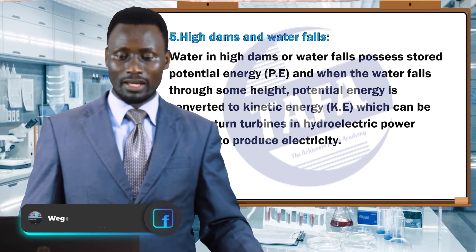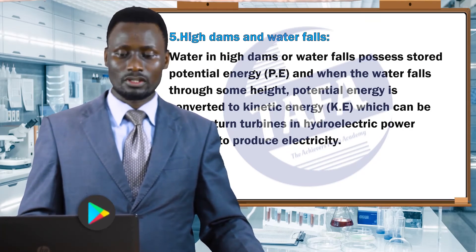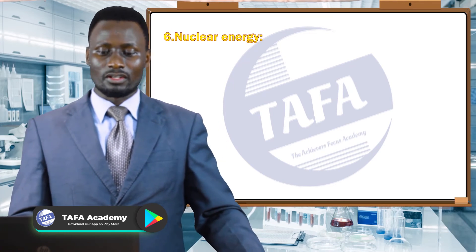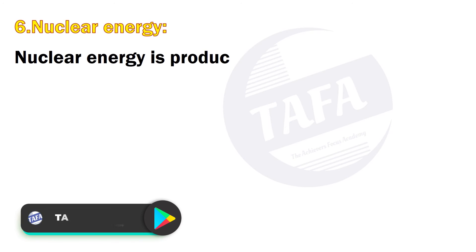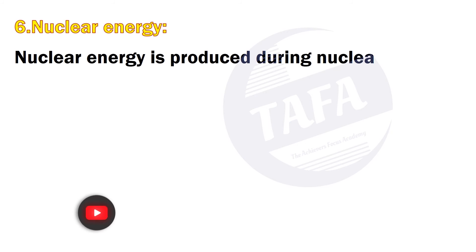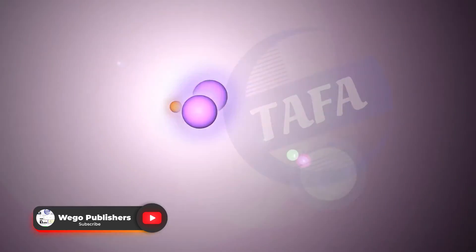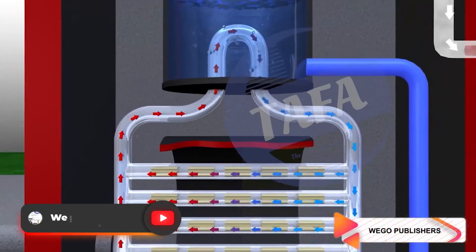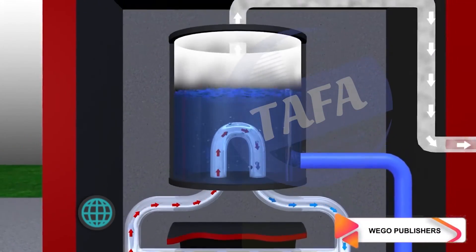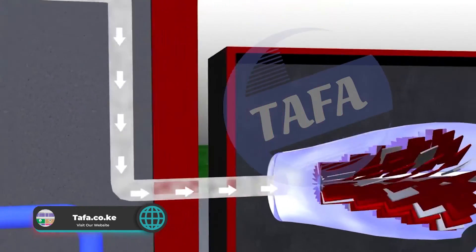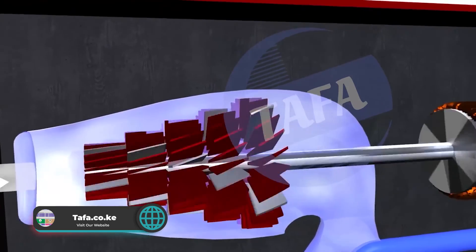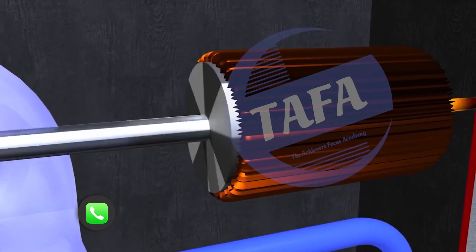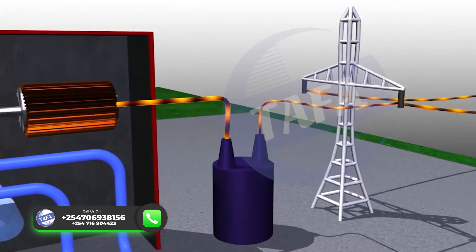Another source of energy is nuclear energy. Nuclear energy is produced during nuclear fission and nuclear fusion. This energy can be used to heat water to produce artificial steam at very high pressure, which can then be used to turn turbines to produce electricity in a nuclear plant.